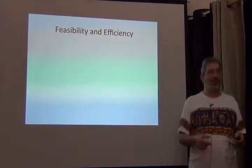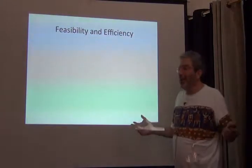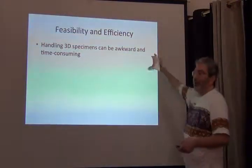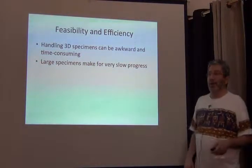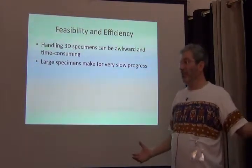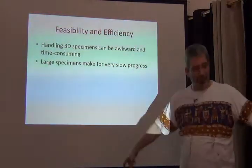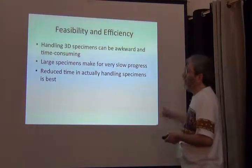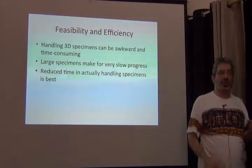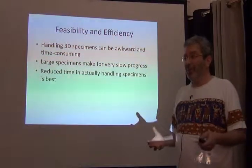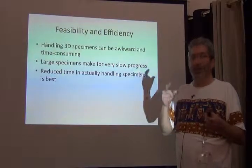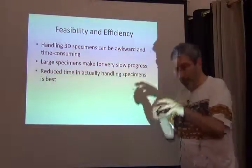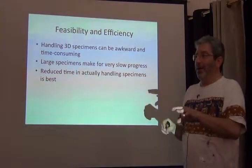The next thing to think about is feasibility. We've got to make this process efficient, because whatever we're going to do, we're going to do it 120,000 times. Handling these specimens is awkward and time-consuming, especially large specimens — we have ostrich pelts that would go from here to the table, and it takes two people to lift one without damaging it. So we really don't want to be handling specimens much at all. The difference is between picking up a specimen and repeatedly going label, type, label, type — handling that specimen a lot.